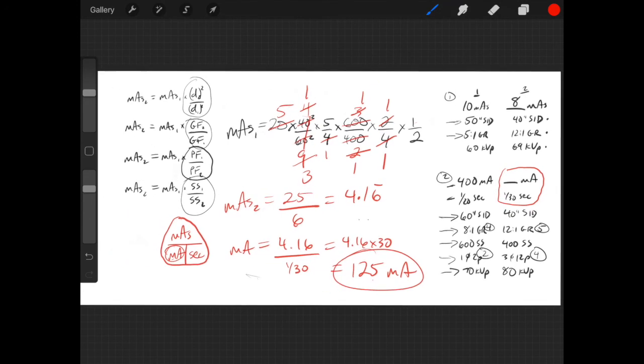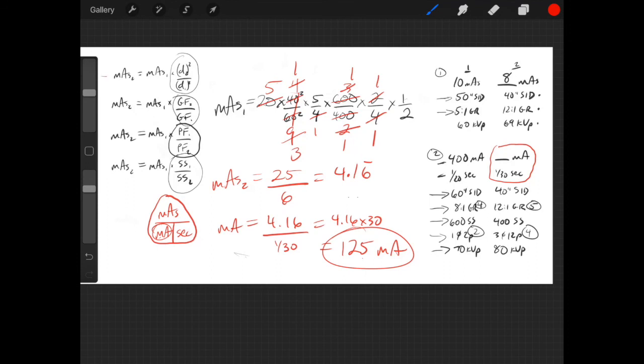So just to review, we set the problem up according to this style of formula for each variable. mAs2 equals mAs1 times, and whatever the conversion is for each variable here. This was distance, this was grid factor, screen speed, power supply. And then this 1 half was a result of increasing the kVp 15% to maintain density. We halved the mAs. Reduce, and then you get mAs2. And then after mAs2 is obtained, we need to look at the question again. It's not asking for mAs, it gives you a time. You have to find the mA that they're asking for, and you can finally do that now that you have mAs2 value.